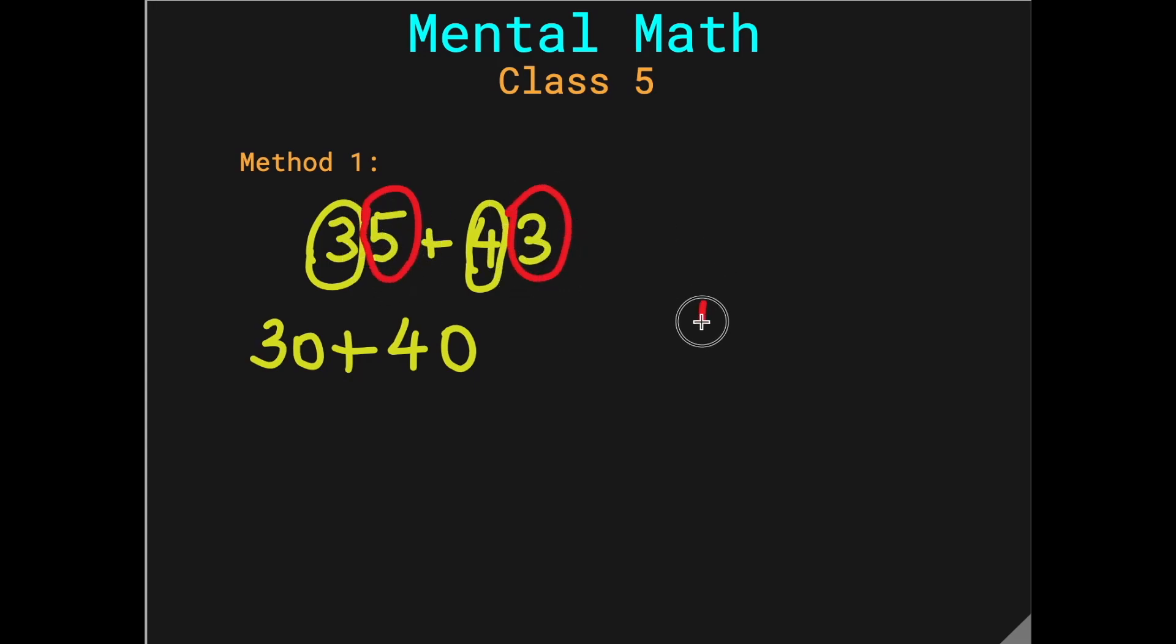We will add them separately. So, 30 plus 40 is 70. We do 3 plus 4 is 7 and 0 stays the same. And what is 5 plus 3? 5 plus 3 if we use a single digit addition is 8 and we just add the two numbers together to get 78. Simple, isn't it?